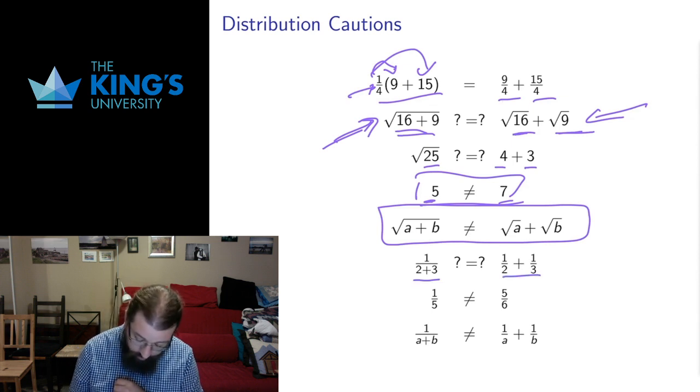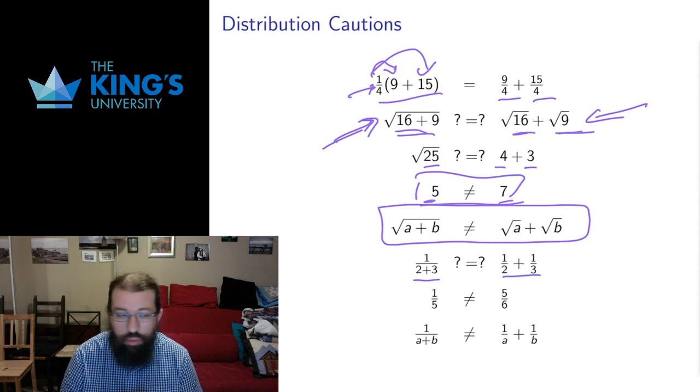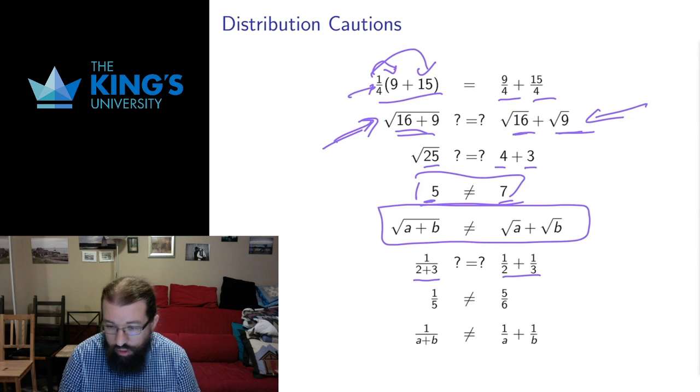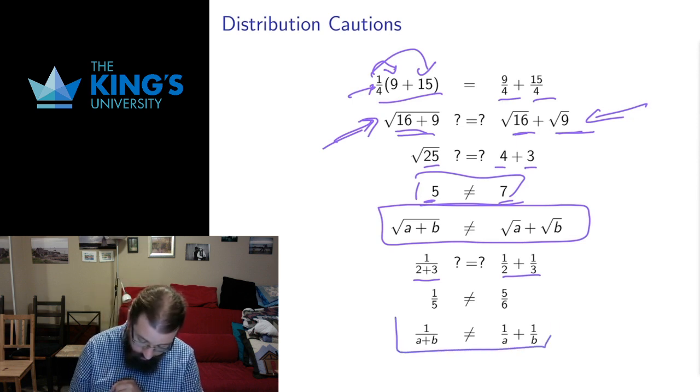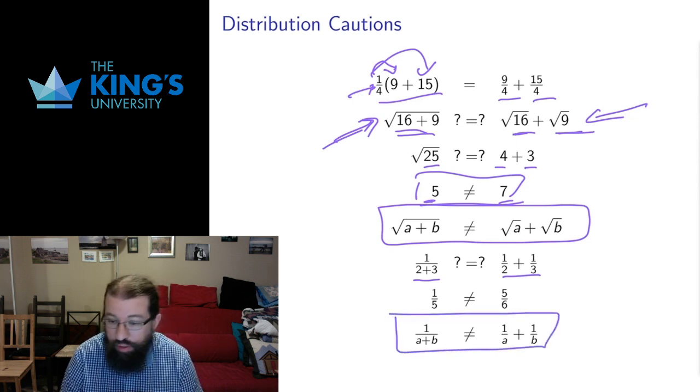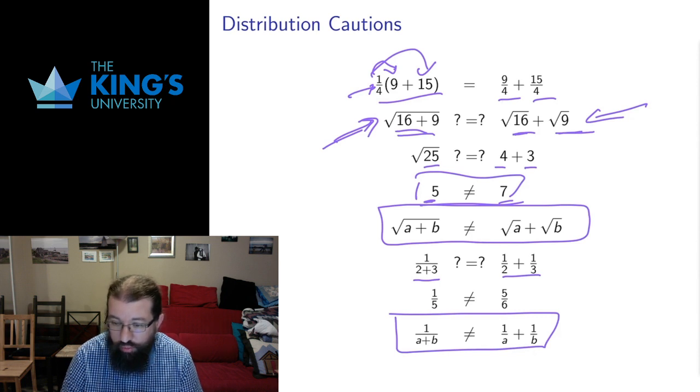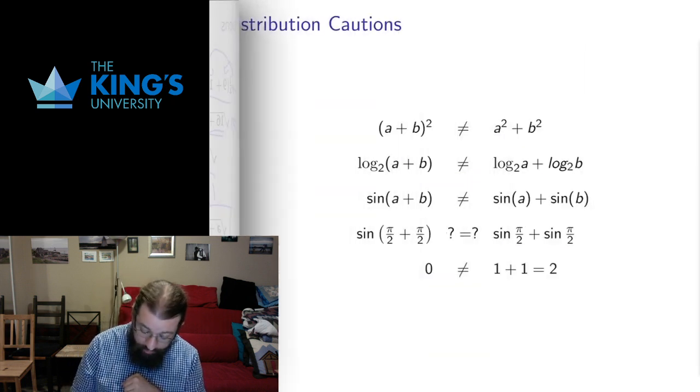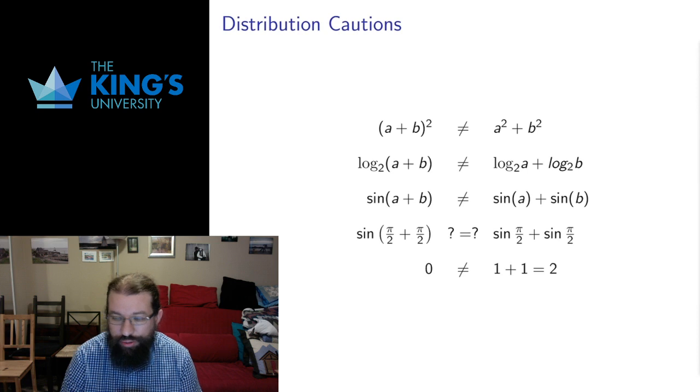Denominators don't. We talked about this in a video for Algebra Part 1. If you looked at 1 over 2 plus 3, if you tried to split up this denominator, you get 1 fifth, which is not the same as 5 sixths. If I want to write this in general, 1 over a plus b is not the same thing as 1 over a plus 1 over b. And I have a few more of these because people try and do all sorts of these.